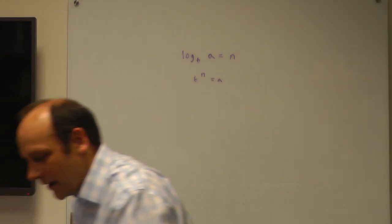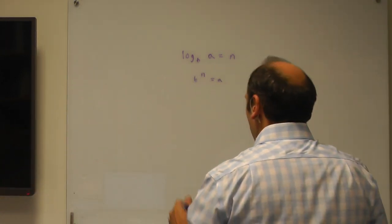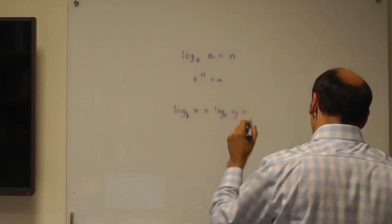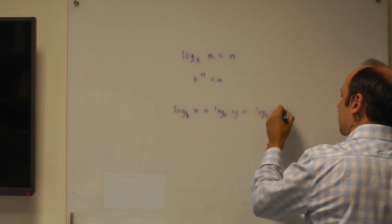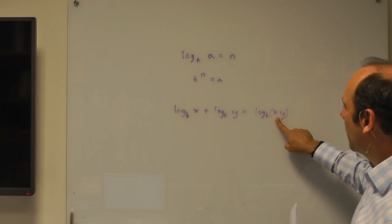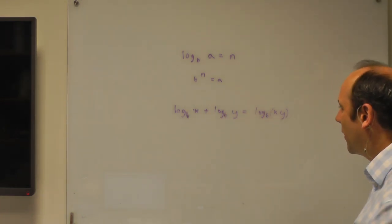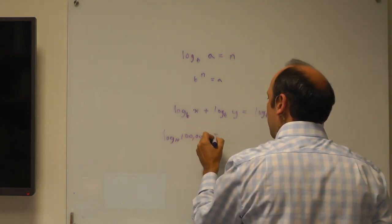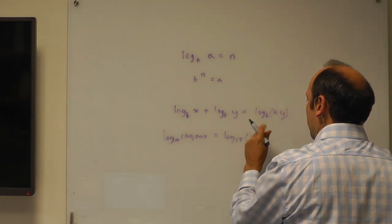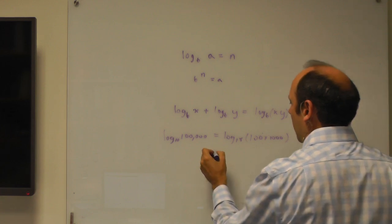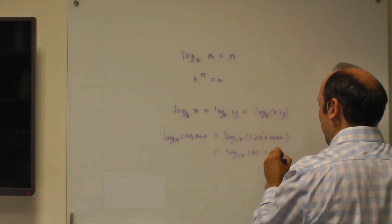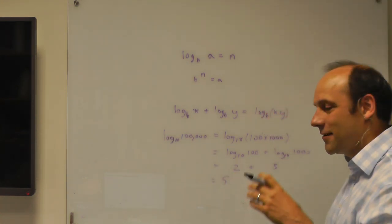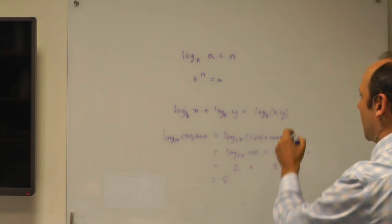So if I take an addition rule to start off with: log to the base B of X plus log to the base B of Y equals log to the base B of X times Y. That is, if I take log of XY, I can separate them out into log X plus log Y. For instance, if I have log of 100,000 to the base 10, that's equal to log to the base 10 of 100 times 1,000. So that's equal to log to the base 10 of 100 plus log to the base 10 of 1,000, which is 2 plus 3 equals 5. Log to the base 10 of 100,000 — 10 to the 5 is 100,000 — works out. So that's our rule for addition.